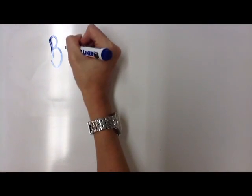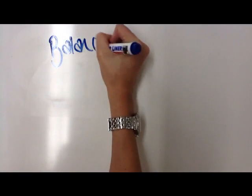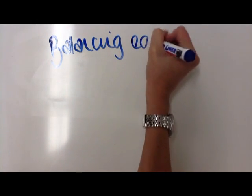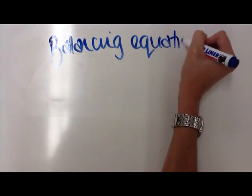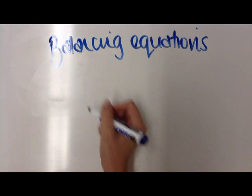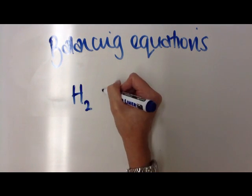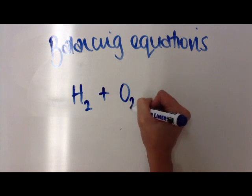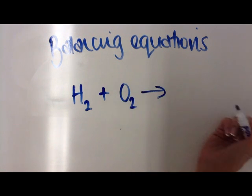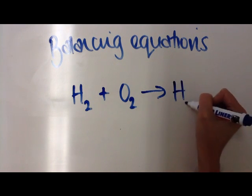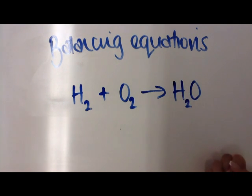Today we're going to learn about balancing equations, every GCSE student's favorite exam question. We start off with something simple. We take a diatomic molecule of hydrogen, we add it to a diatomic molecule of oxygen. The arrow just means change to, obviously never an equals. Some H2O which we all know is water.